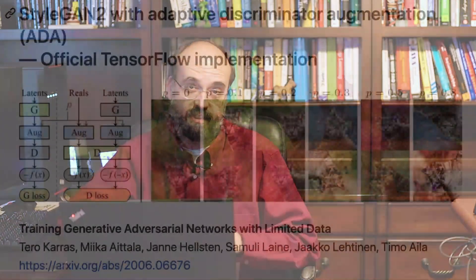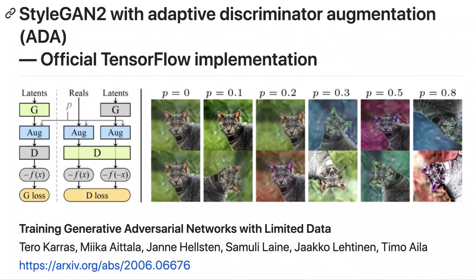Augmentation has really propelled computer vision a lot. You can use generators like in Keras where you can take images, flip them, rotate them, change their colors, and do all sorts of things to give you additional training data that was really not in the actual training set. Something that was just released, which I've already incorporated for next semester, is NVIDIA StyleGAN2 ADA, which uses augmentation to give the discriminator a lot more images to deal with when the GAN is learning to create fake images.